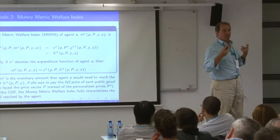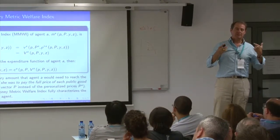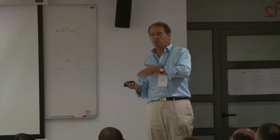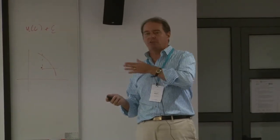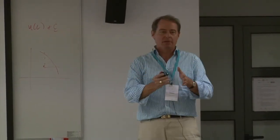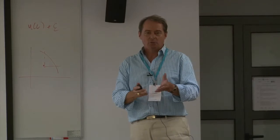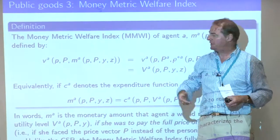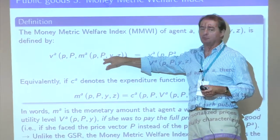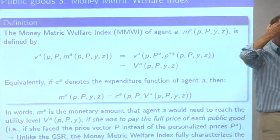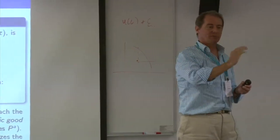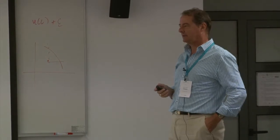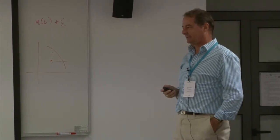What I'm doing is: the main problem with the previous concept was that people were not paying the same price. So why not use a money metric equivalent, transforming everything to a common set of prices — most naturally, the market prices? I want to refer everybody to the same set of prices. So the money metrics are going to be potentially very different.